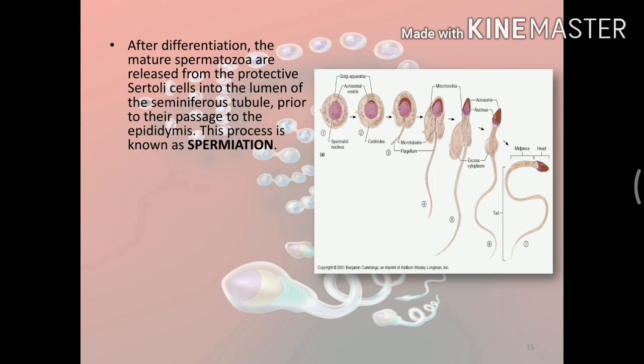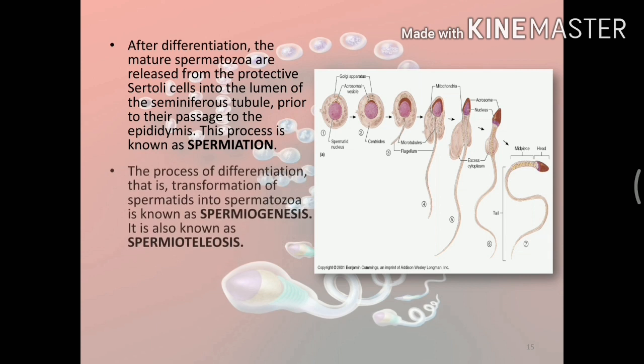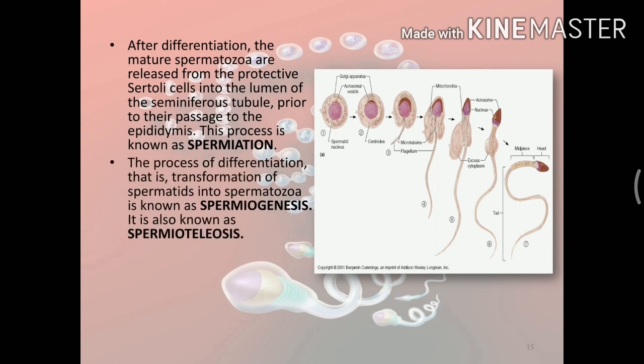After differentiation, the mature spermatozoa are released from the protective Sertoli cells into the lumen of the seminiferous tubule, prior to their passage to the epididymis. This process is known as spermation. The process of differentiation — that is, the transformation of spermatids into spermatozoa — is known as spermiogenesis, also known as spermioteliosis.